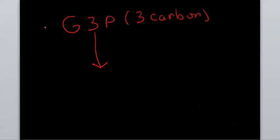At the end of the energy investment phase, you are going to get something we've seen before: G3P. We saw that in photosynthesis. G3P is a three-carbon molecule, so that would mean we have two G3Ps.